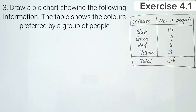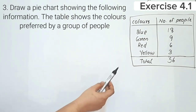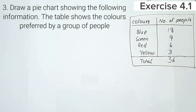Draw a pie chart showing the following information. The table shows the colors preferred by a group of people. The colors are blue, green, red, and yellow. The number of people are 18, 9, 6, and 3.